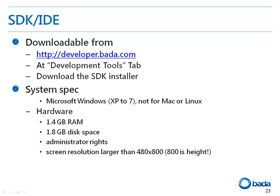To develop a Bada application, you have to download the SDK first. You can download the SDK from developer.bada.com. If you click on the Development Tools tab, you can download the SDK. To use the SDK, you need a computer with Microsoft Windows, at least 1.4GB of memory, at least 1.8GB of free disk space, and administrator privilege.